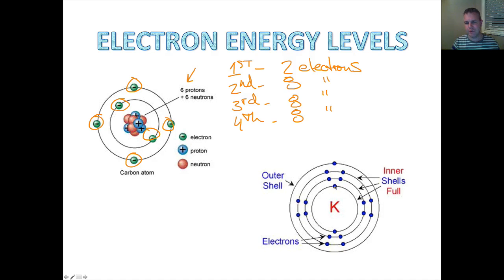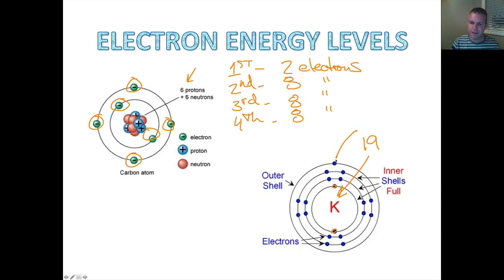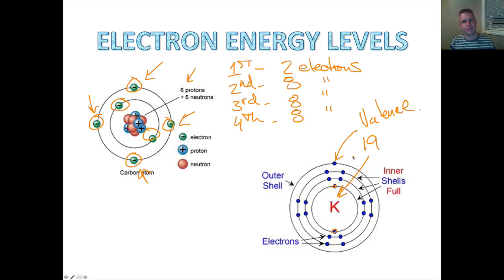When we look at potassium: two in the first energy level, eight in the second energy level, eight in the third energy level. Then the last one over here — because its atomic number is 19 — that means it has 19 electrons. This electron out here is known as a valence electron. These are also valence electrons. Valence electrons are electrons that are in the outermost energy level.